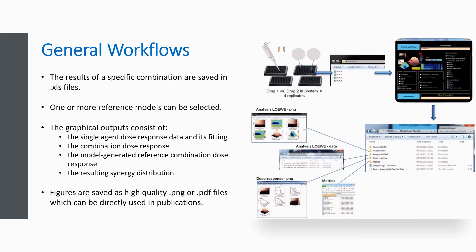A typical analysis is performed as follows. First, upon completion of experiments, the results of a specific combination, including replicates if available, are saved in .xls files. Once ComBenefit is launched, the project folder containing all experimental .xls files is selected. Then, one or more reference models can be selected. Other options and graphical outputs can be chosen as per requirements or preferences. The graphical outputs consist of the single-agent dose-response data and its fitting, the combination dose-response, the model-generated reference combination dose-response, and the resulting synergy distribution.